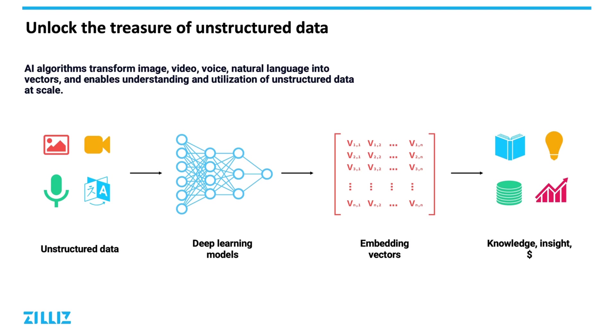The feature information usually comes in the form of embedding vectors and matrices. The end result of this is that unstructured data has been turned into a vector computation.